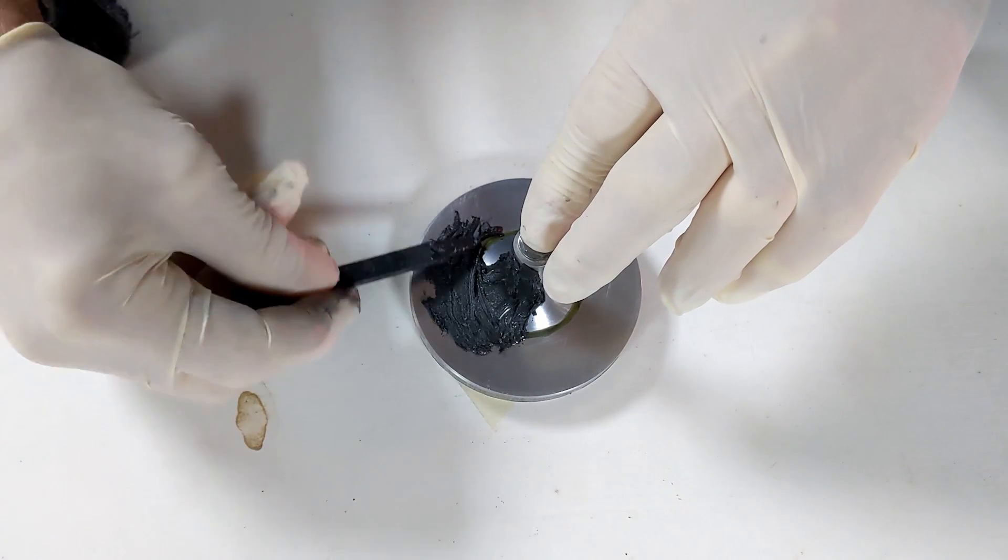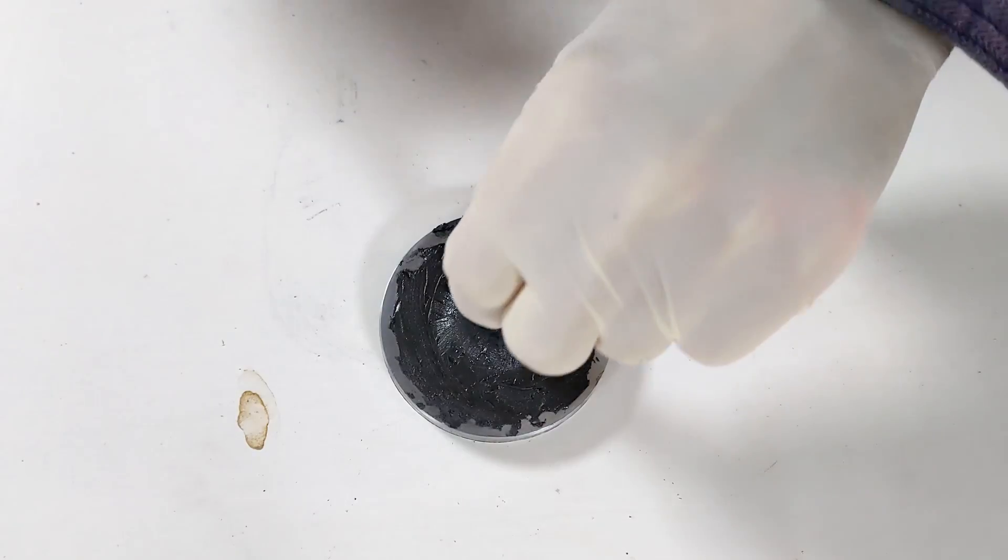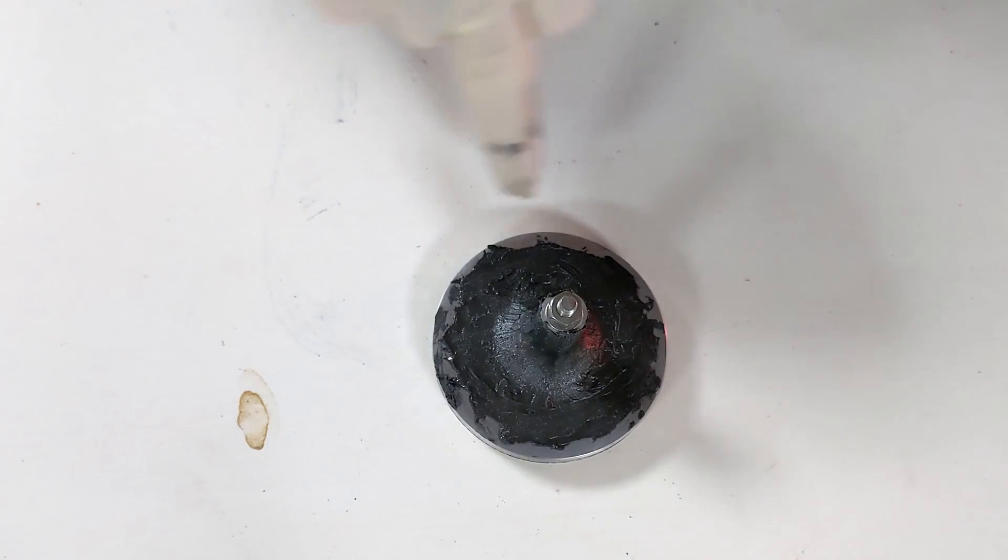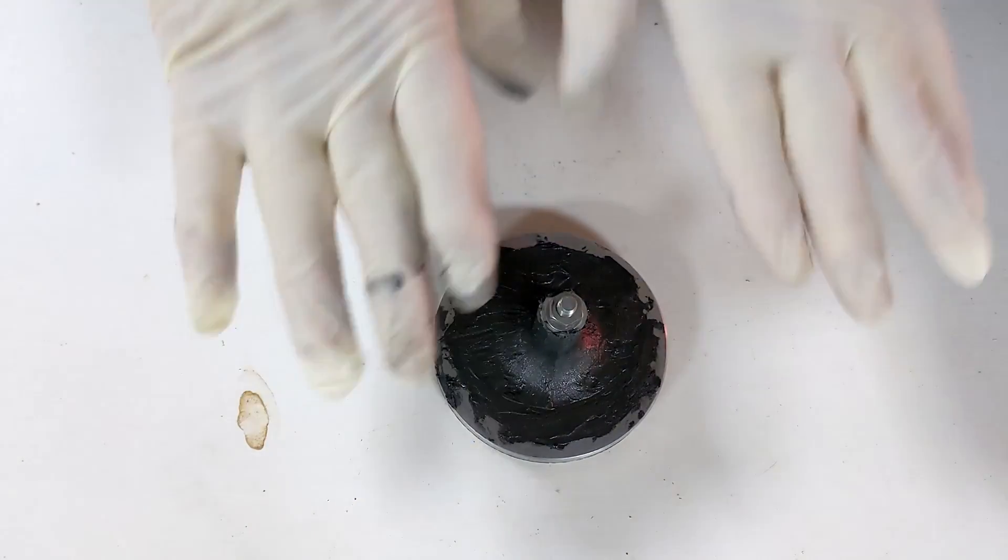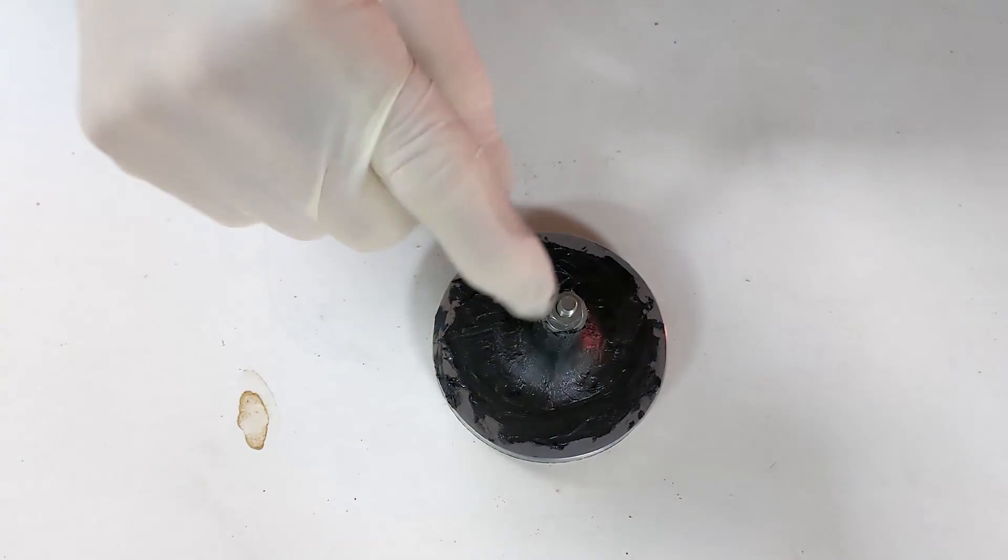We leave this to go a bit tacky before we put the next layer on top. Okay it's a bit rough and spiky but it doesn't matter because this is still going to be soft and we're going to smooth it out as we put the cloth on and brush on the resin.